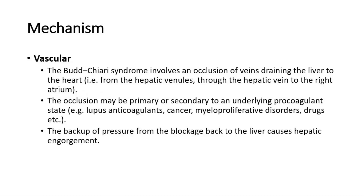In vascular causes, the Budd-Chiari syndrome involves an occlusion of veins draining the liver to the heart — from the hepatic veinules, through the hepatic vein, to the right atrium. The occlusion may be primary, or secondary to an underlying procoagulant state, such as lupus anticoagulants, cancer, myeloproliferative disorders, drugs, and so on. The backup of pressure from the blockage back to the liver causes hepatic engorgement.